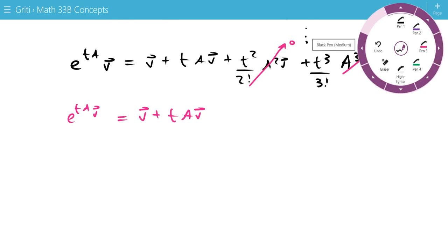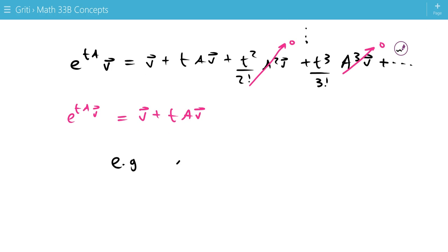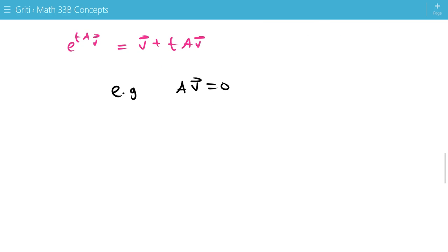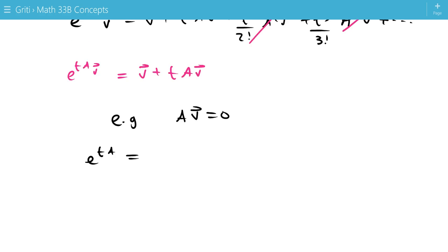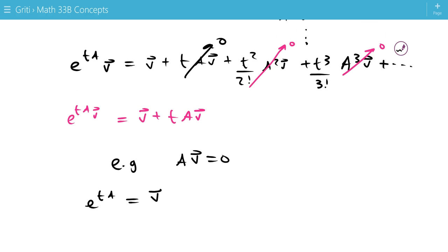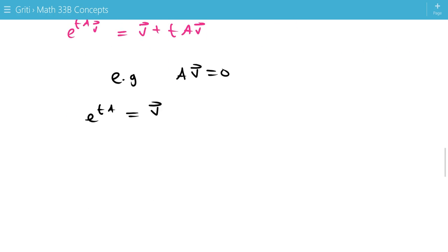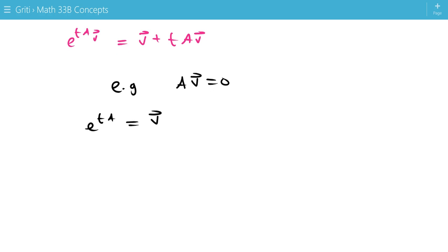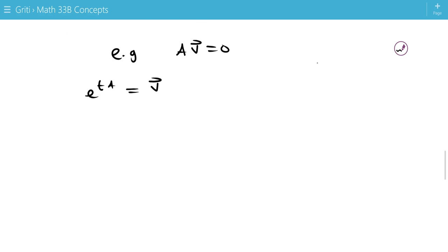Another example. So, if a b equals 0. So, this is simply the case where b is in the null space or kernel of a, that means e to the t a, this term will go to 0 as well. So, it'll just equal b. So, if b is in the null space of a, then the exponential times b just equals b itself. So, this is a good property that we'll use.